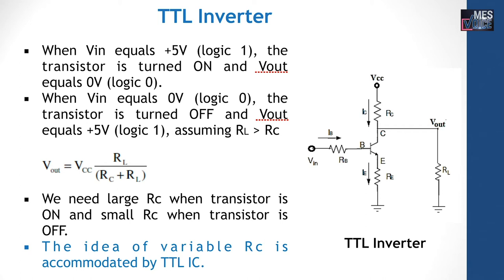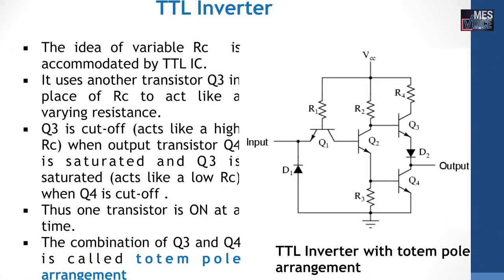VOUT is given by: VOUT = VCC × RL / (RL + RC), according to the voltage divider rule. We need a large RC when the transistor is ON and a small RC when the transistor is OFF. The idea of variable RC is accommodated by the TTL IC. This is the circuit diagram of the TTL inverter with totem pole arrangement, where another transistor Q3 is used in place of RC to act like a varying resistance. Q3 is cut off, acting like a high RC, when output transistor Q4 is saturated, and Q3 is ON, acting like a low RC, when Q4 is cut off.